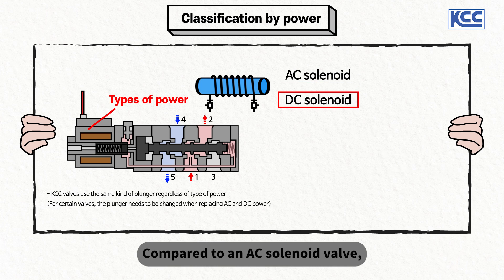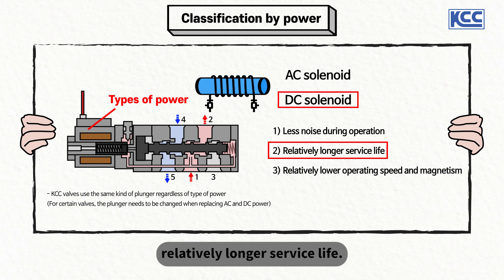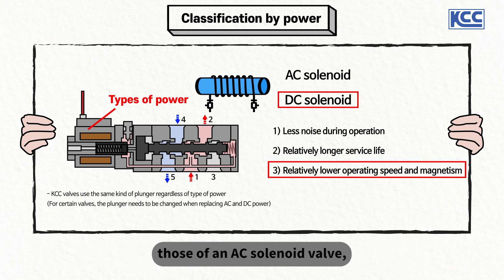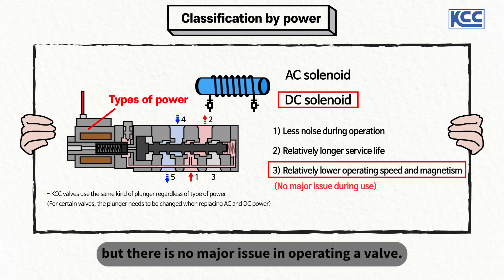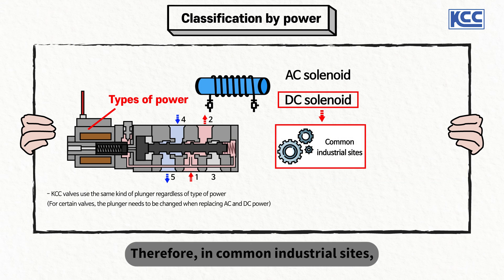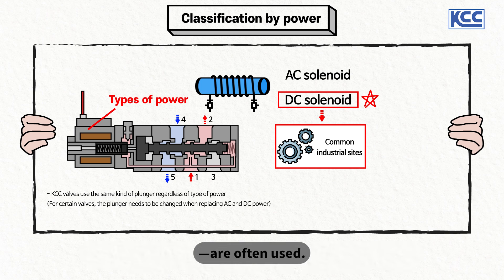Compared to an AC solenoid valve, a DC solenoid valve is quieter with a relatively longer service life. Its operating speed and magnetism may be lower than those of an AC solenoid valve, but there is no major issue in operating a valve. Therefore, in common industrial sites, DC solenoid valves, which are more typically stable, are often used.